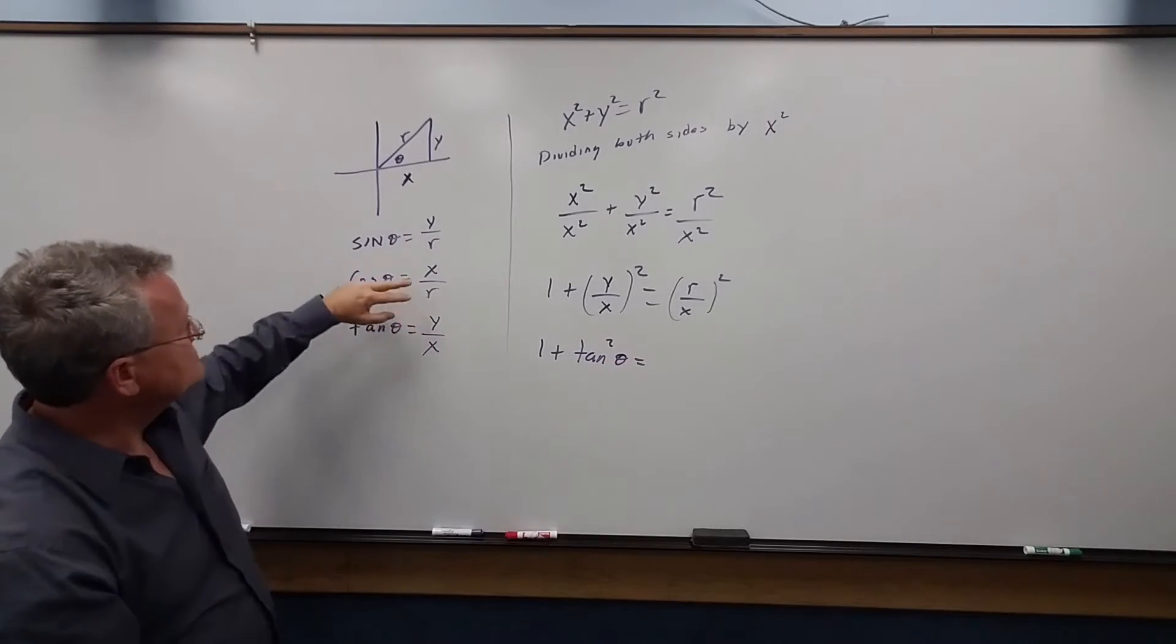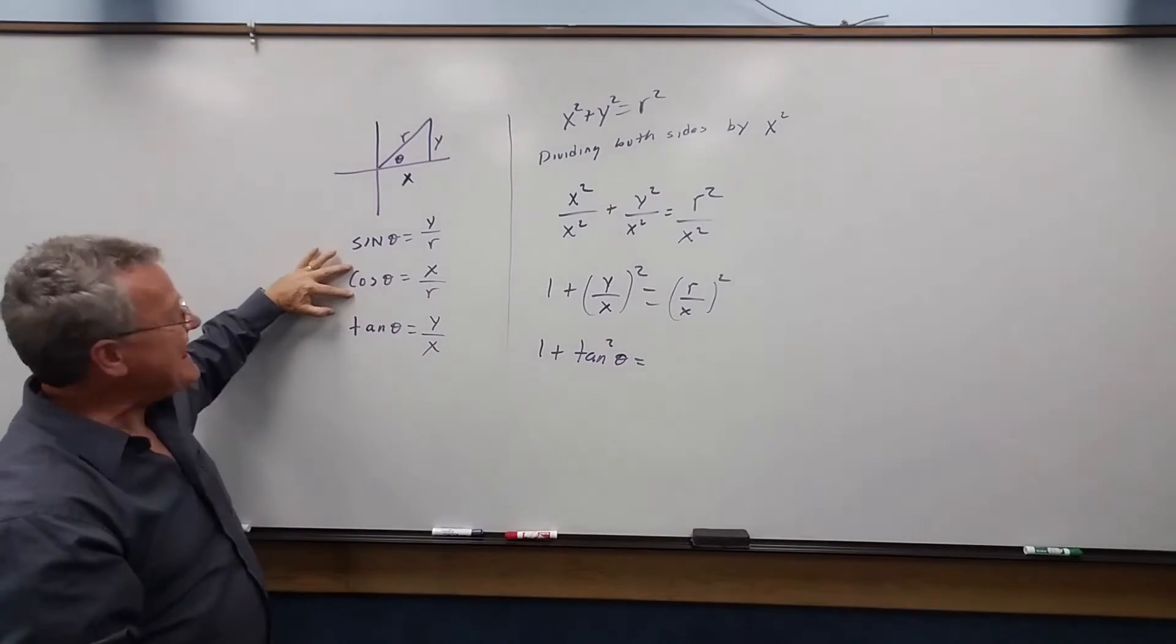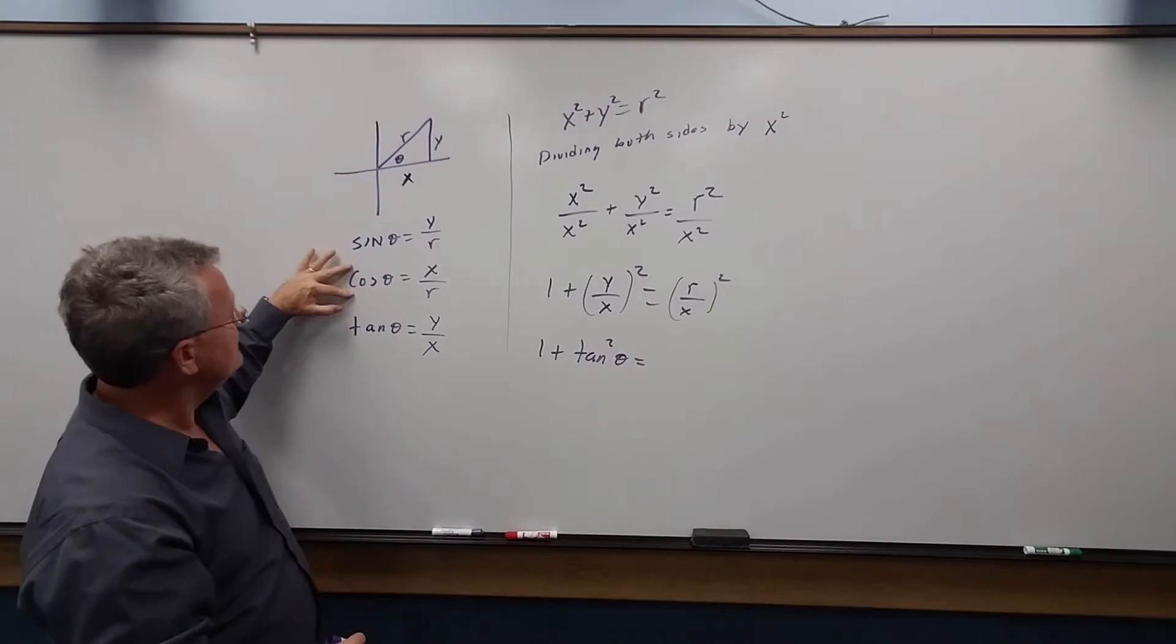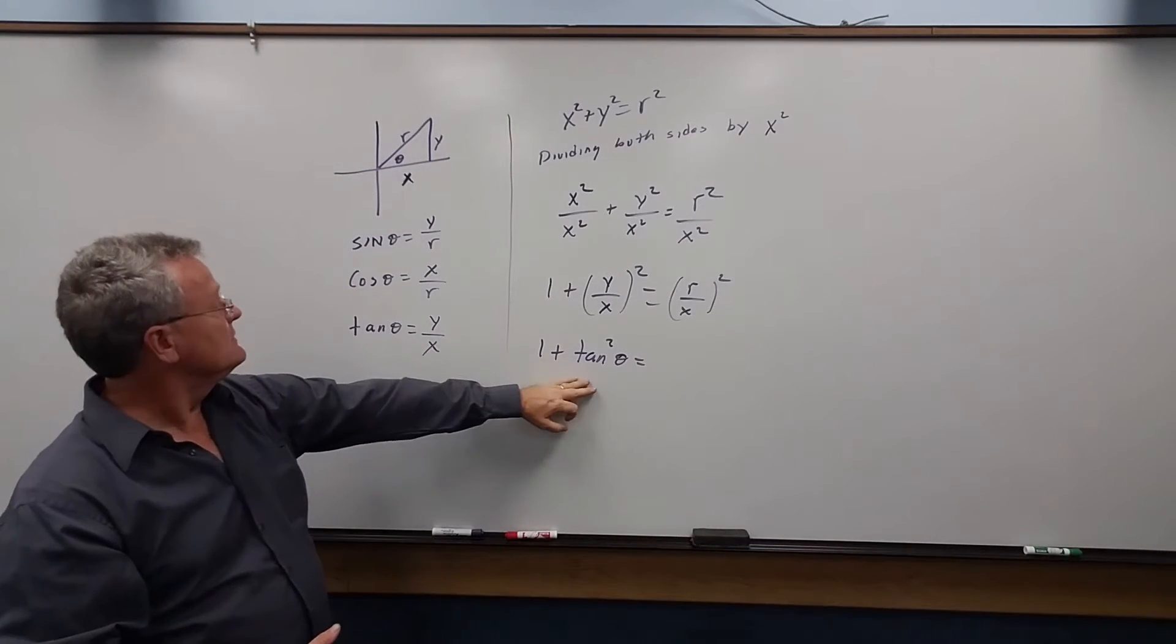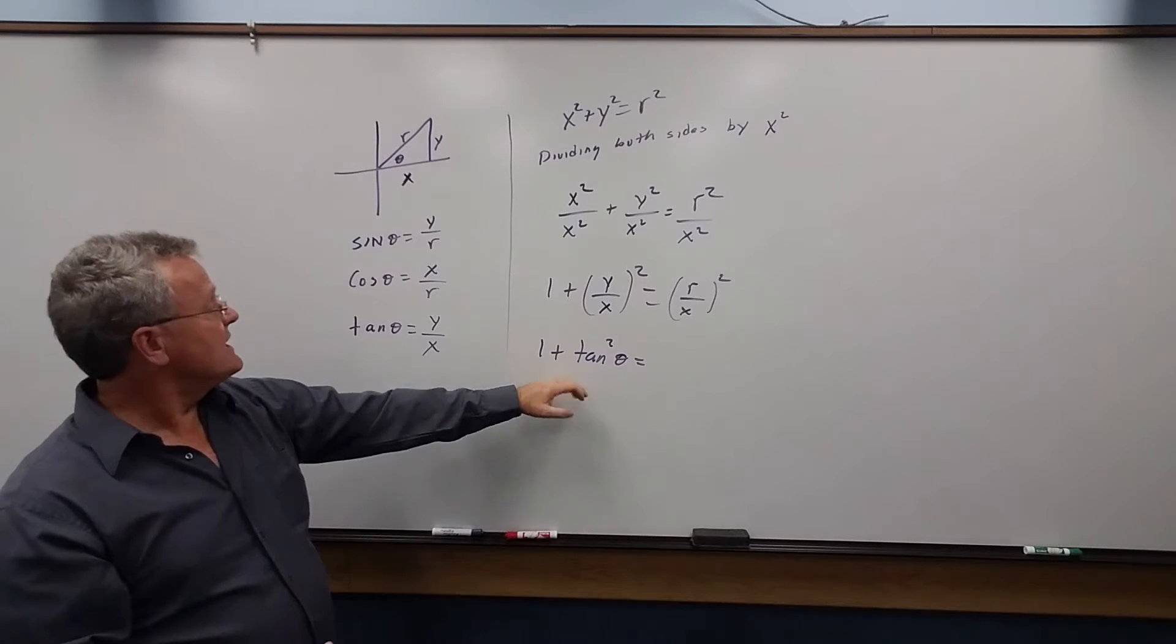r over x, well that's the companion function of cosine, and the companion function of cosine is secant.